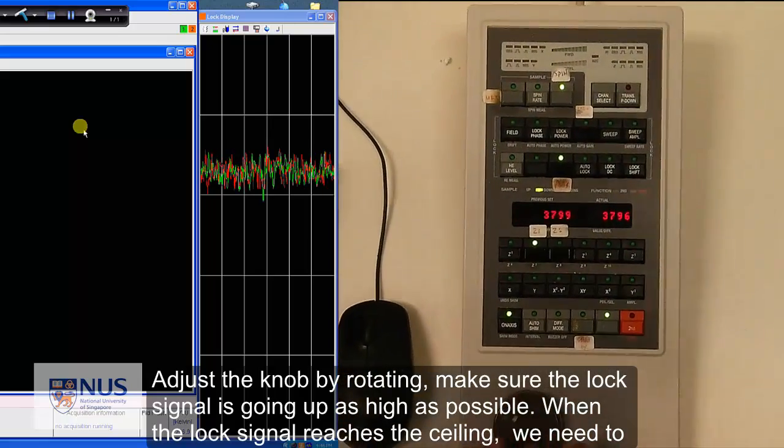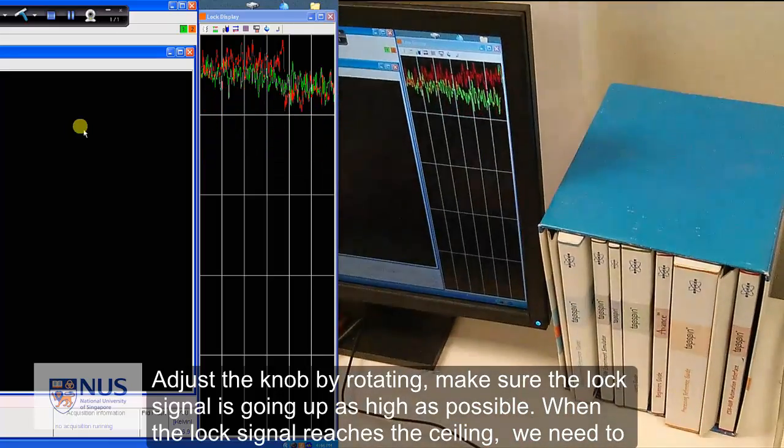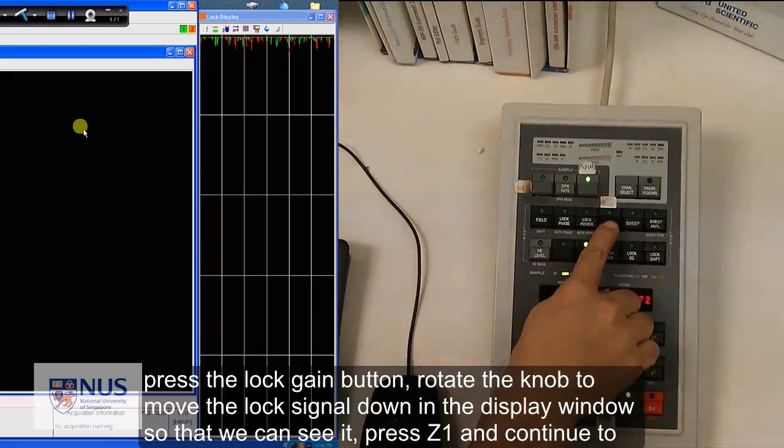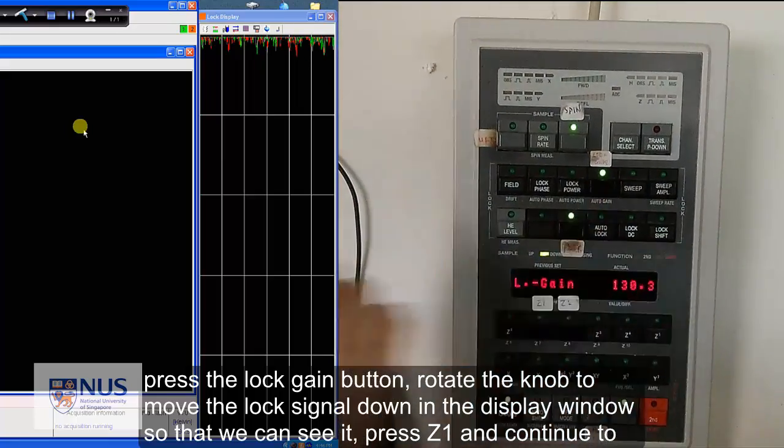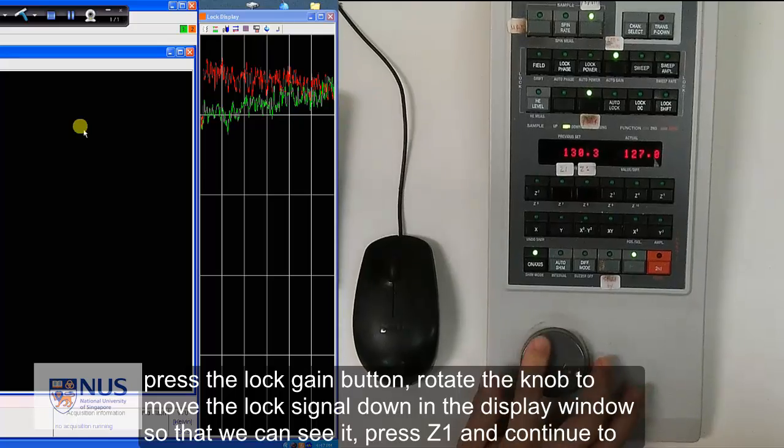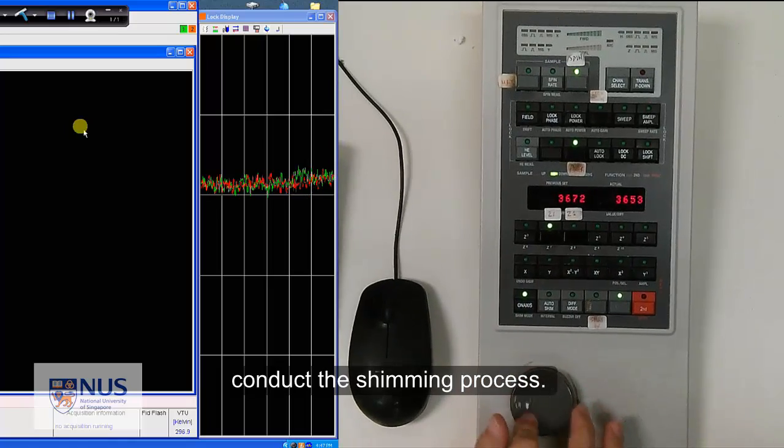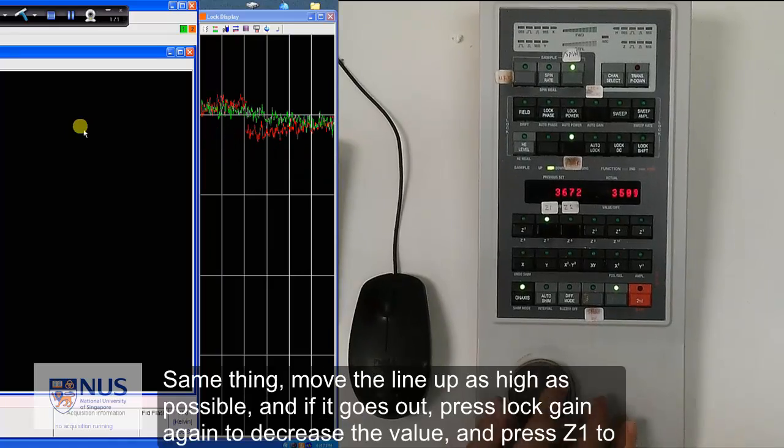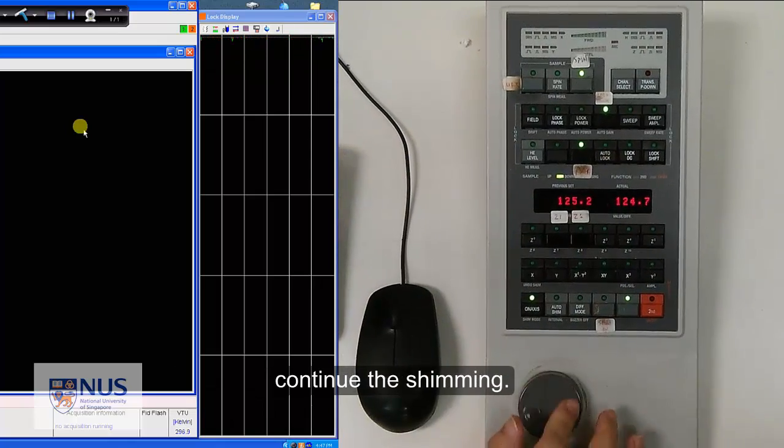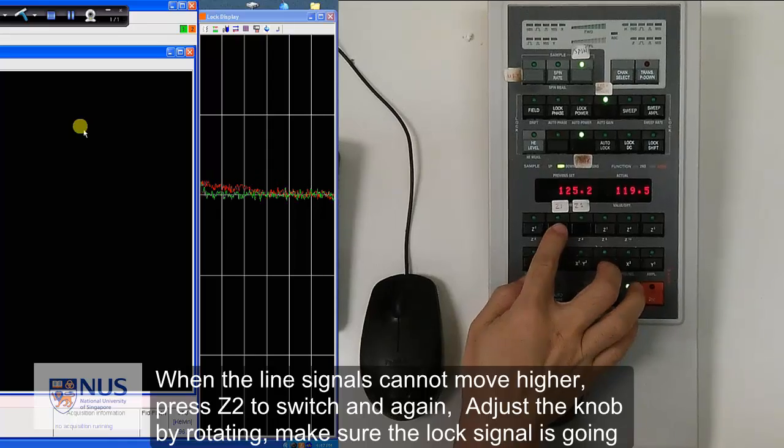Press the button Z. Adjust the knob by rotating, making sure that the lock signal is going up as high as possible. When the lock signal reaches the ceiling, we need to press the lock gain button. Rotate the knob to move the lock signal down in the display window so that we can see it. Press Z1 and continue to conduct the shimming process. Move the line up as high as possible. And if it goes out of the picture, press lock gain again to decrease the value. Press Z1 to continue the shimming.